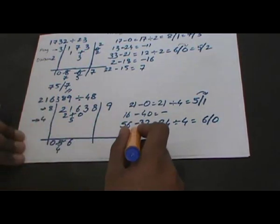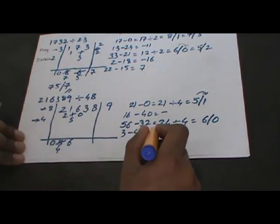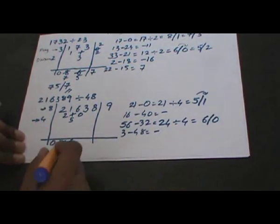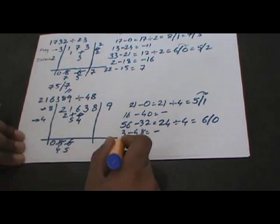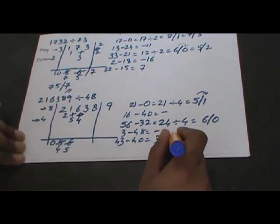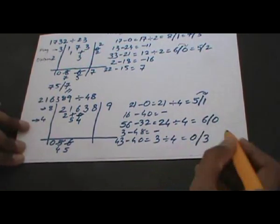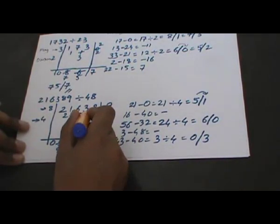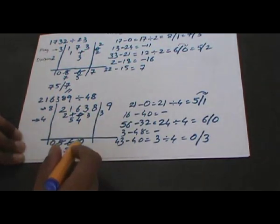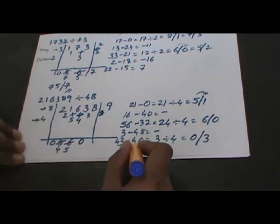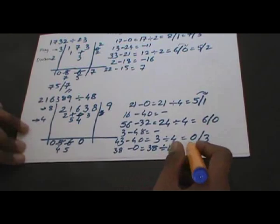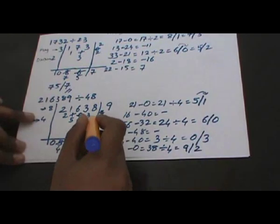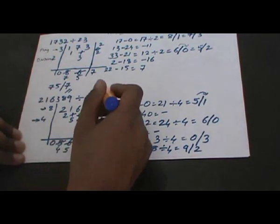8 multiplied by 6 gives 48, subtracted from 3 again gives a negative number. We reduce the quotient by 1 — it becomes 5 — and 4 is added to the remainder 0 giving 4. 8 multiplied by 5 gives 40, subtracted from 43 gives 3, which is positive. 3 divided by 4 gives quotient 0 and remainder 3. Then 8 multiplied by 0 gives 0, subtracted from 38 gives 38. 38 divided by 4 gives quotient 9 and remainder 2.